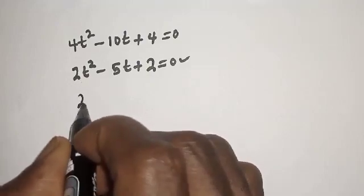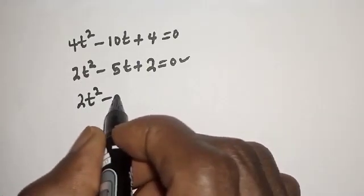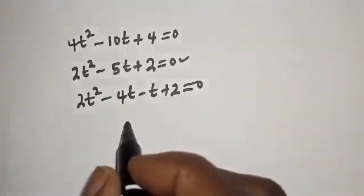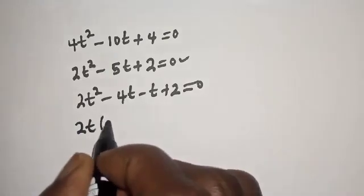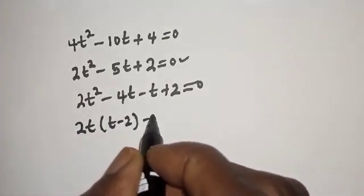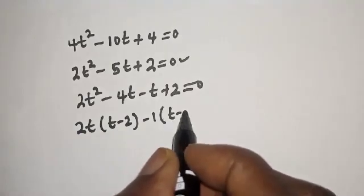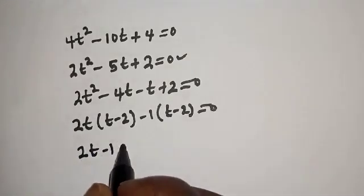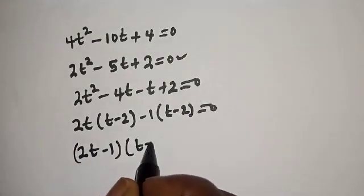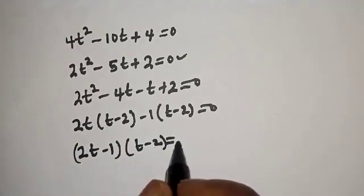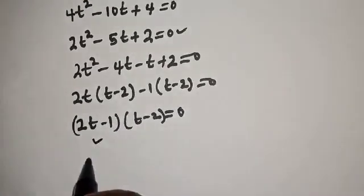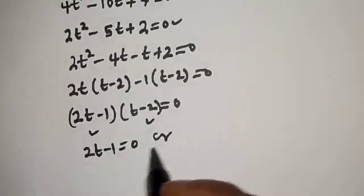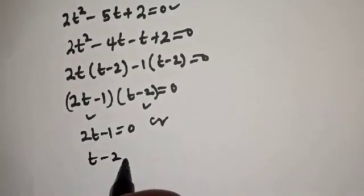We have 2t squared minus 4t minus t plus 2 is equal to 0. Factoring, we get 2t bracket t minus 2, giving us 2t minus 1 multiplied by t minus 2 is equal to 0. There are two cases here: the first case is 2t minus 1 equals 0, or the second case, t minus 2 equals 0.